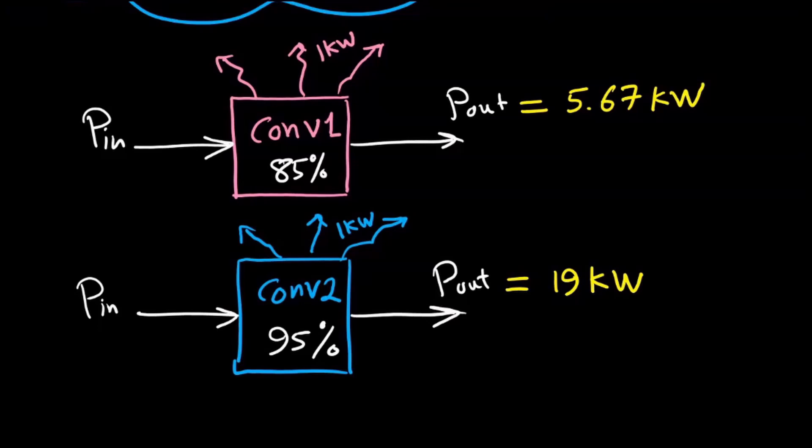So if you want to maintain the same losses, let's say by using the same components, we can increase the power capability by almost three times if we manage to increase the efficiency from 85 percent to 95 percent.